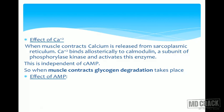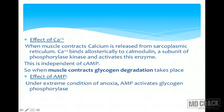There is one more allosteric effector: AMP (adenosine monophosphate). AMP levels are elevated in a low-energy state. Under extreme conditions of anoxia, AMP activates glycogen phosphorylase as a last-ditch mechanism to ensure that all available glycogen is degraded to supply energy to the muscle.